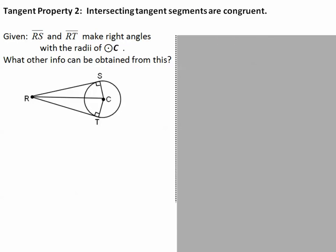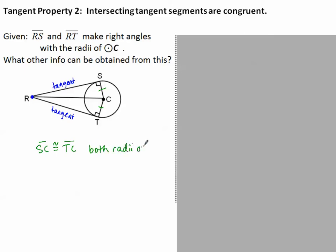Let's look at another property of tangents — property number two: intersecting tangent segments are congruent. It will be given that segment RS and segment RT make right angles with the radii of circle C. Since they make right angles, these must both be tangent segments. Notice they intersect outside the circle at point R. Also, SC and TC are both radii, so since radii of the same circle are all congruent, SC is congruent to TC.